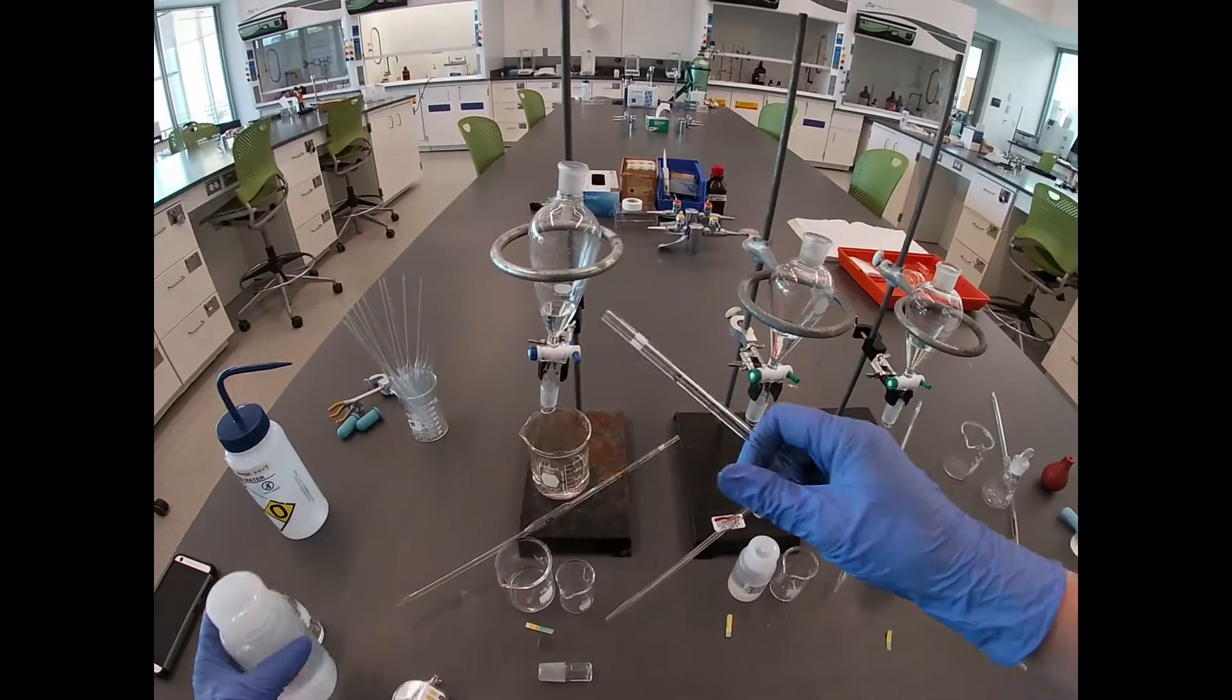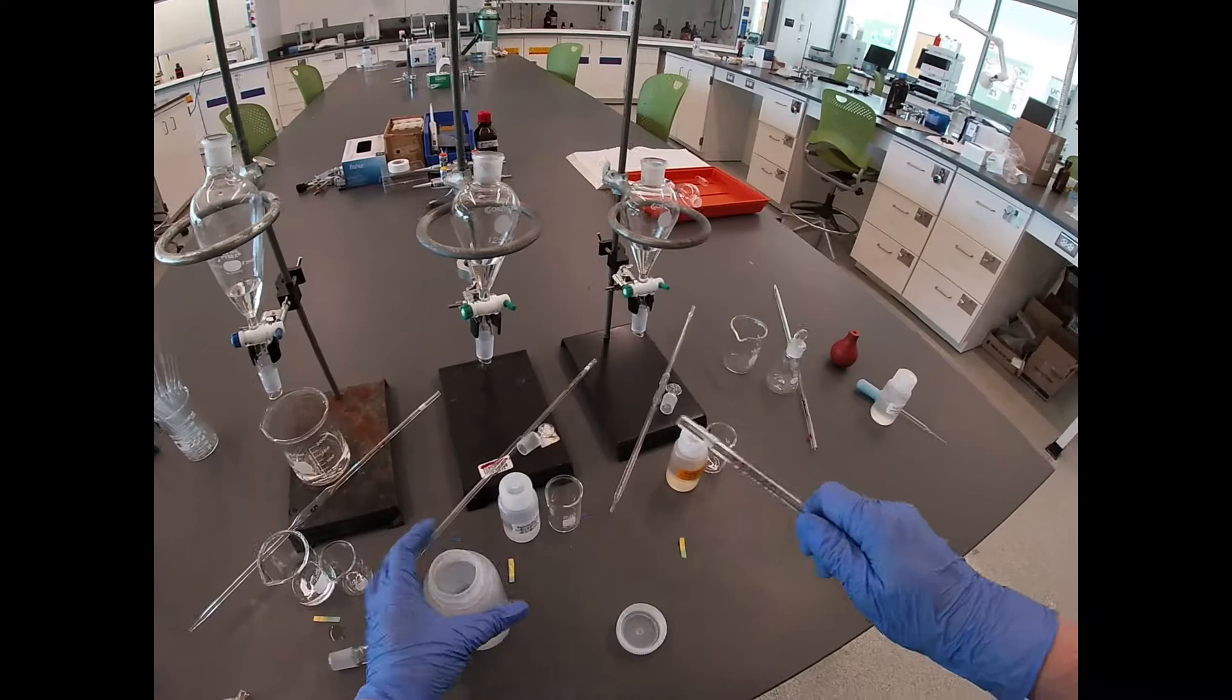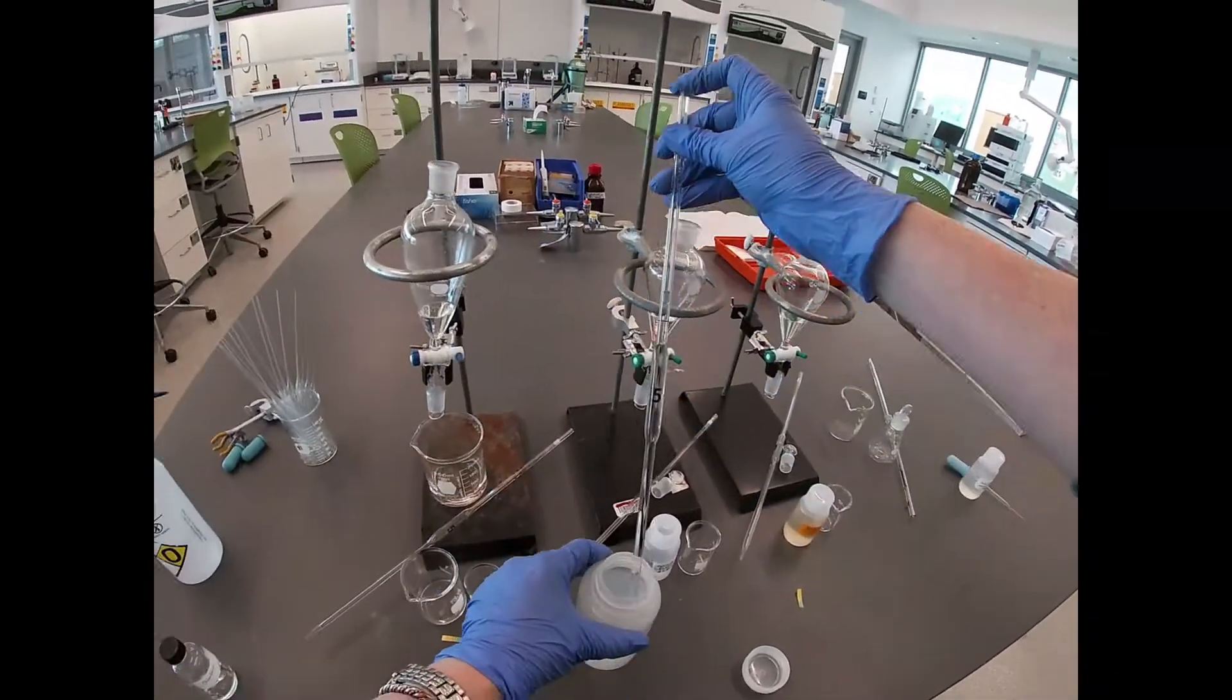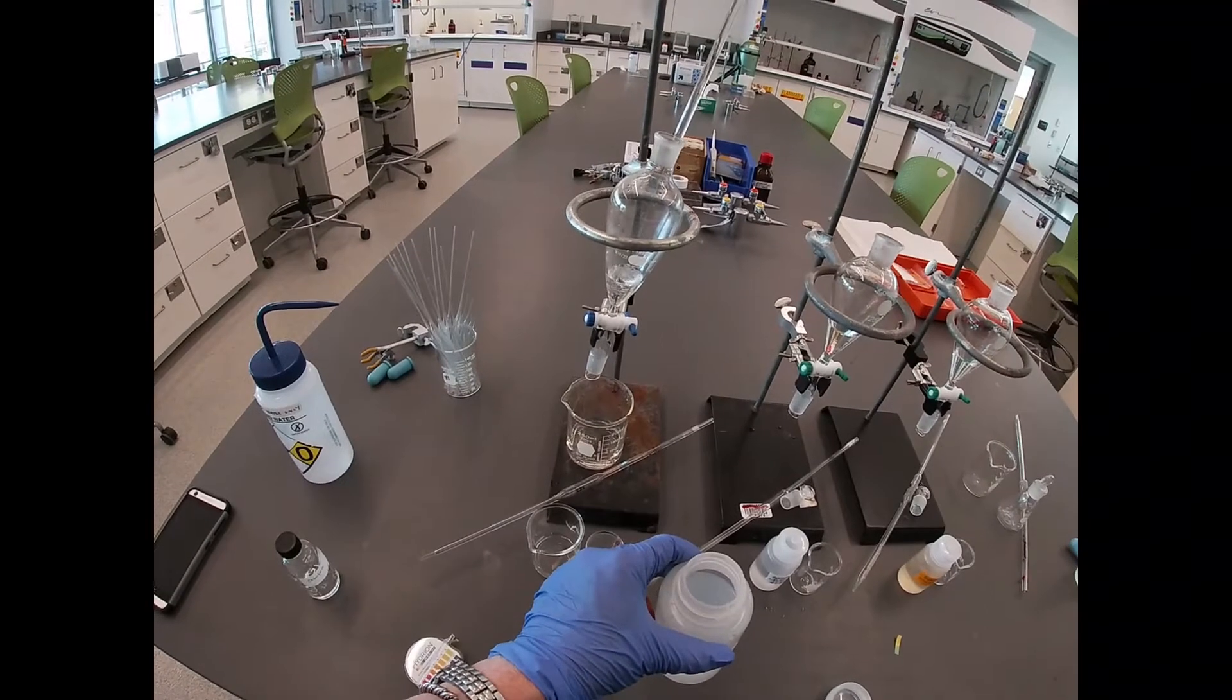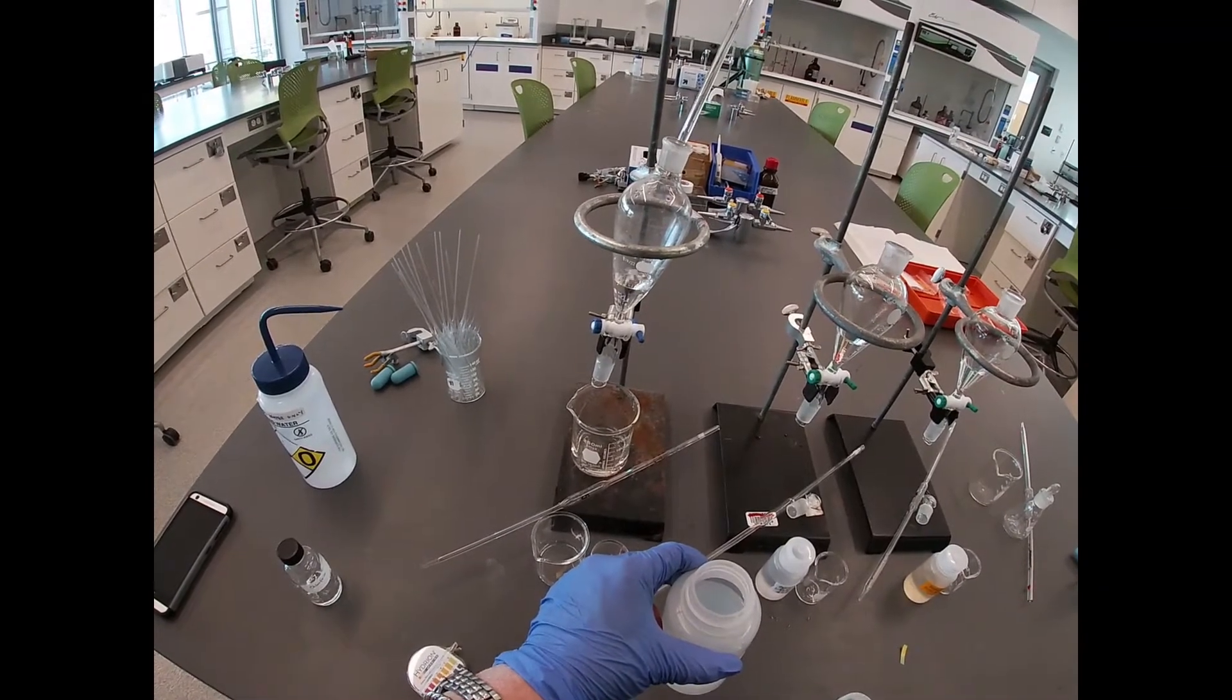We're going to extract into five milliliters of our sulfuric acid. The sulfuric acid is less dense than the chloroform, so it's going to remain on the top.